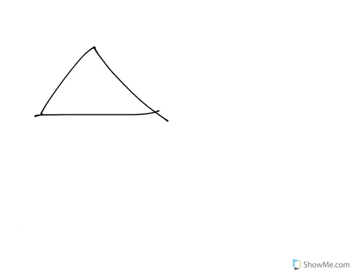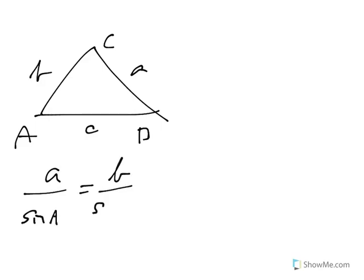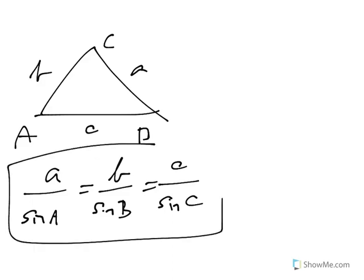The law of sines, the official statement of the law of sines, is side A over sine of angle A equals side B over sine of angle B equals side C over sine of angle C. That's our official law of sines statement.